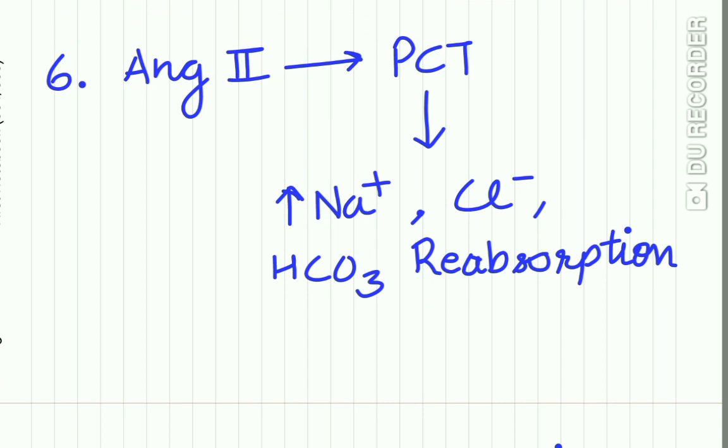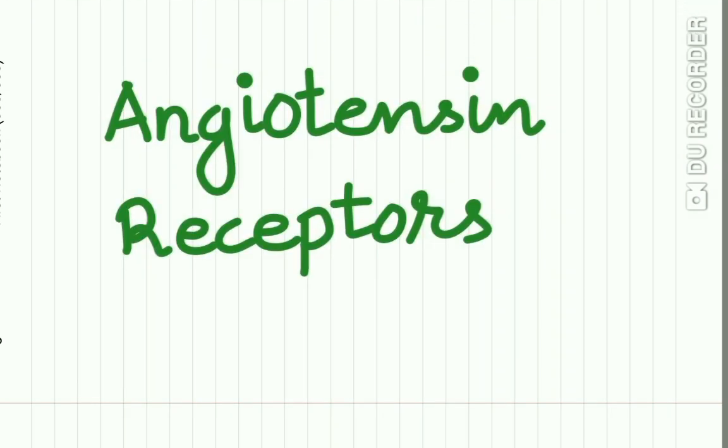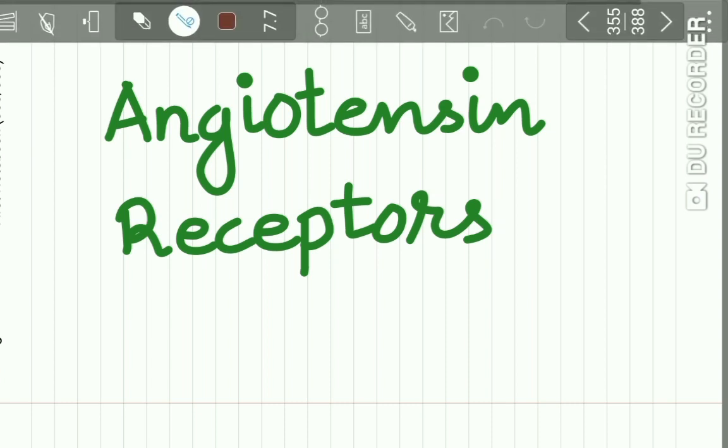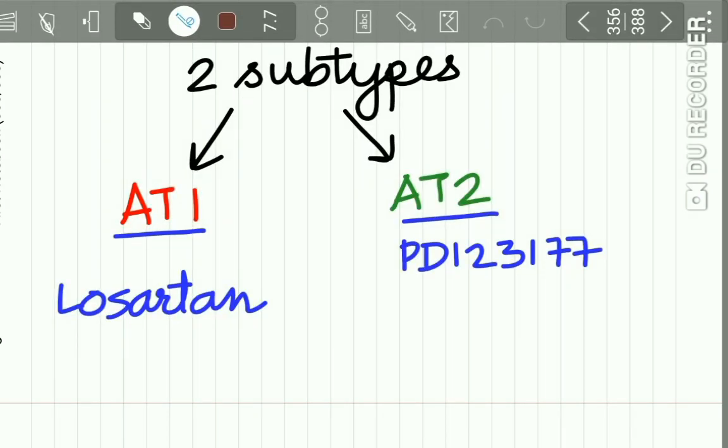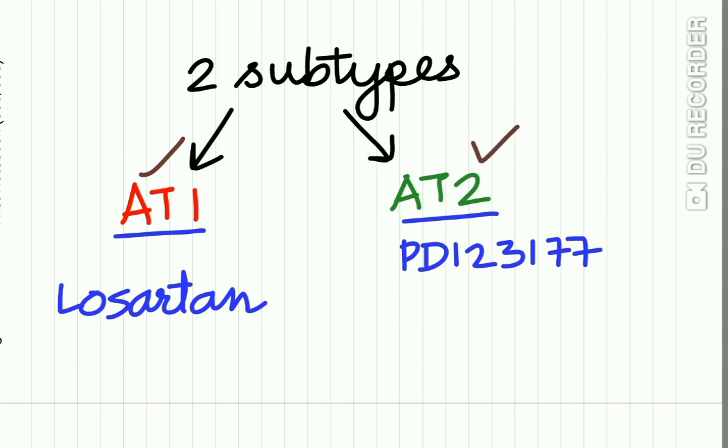Another important action of angiotensin 2 is on the proximal convoluted tubule, which increases reabsorption of sodium, chlorine, and bicarbonate. Angiotensin receptors are of two types: AT1 and AT2. Losartan is an antagonist to AT1 receptor, while PD123177 is an antagonist to AT2 receptors. All major actions of angiotensin 2 are mediated through the AT1 receptor, so this receptor is very important.